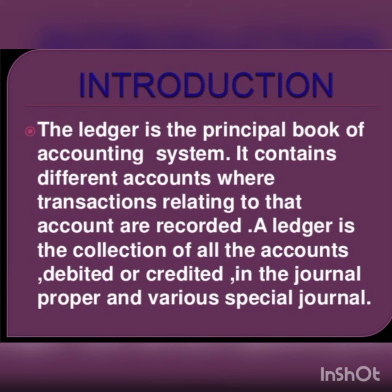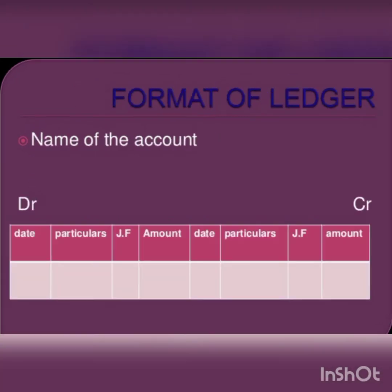In the ledger, each account is opened preferably on a separate page or card. Now we are going to study the format of ledger account. An account is debited or credited according to the rules of debit and credit. The first item in the format of ledger account is the title of the account — the name of the item is written at the top of the format as the title of the account.